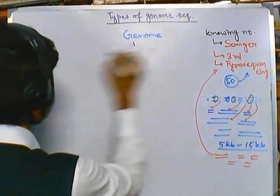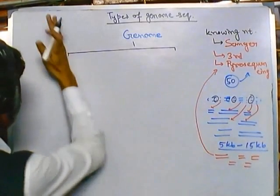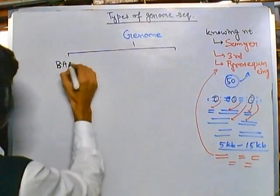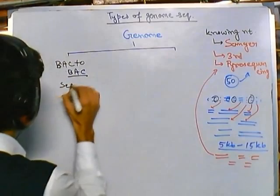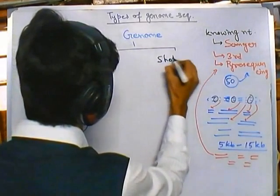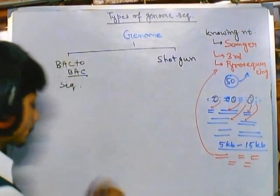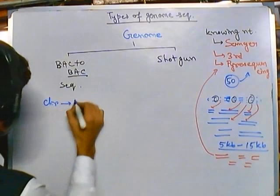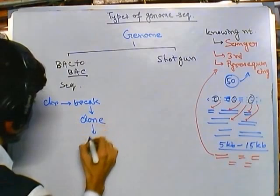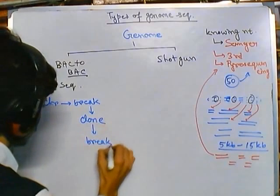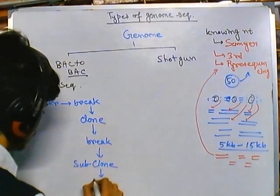Now genome sequencing can be divided into two types: back-to-back sequencing — where BAC stands for bacterial artificial chromosome — and shotgun sequencing. In BAC-to-BAC sequencing, we simply take the chromosome, break it up, and clone it.